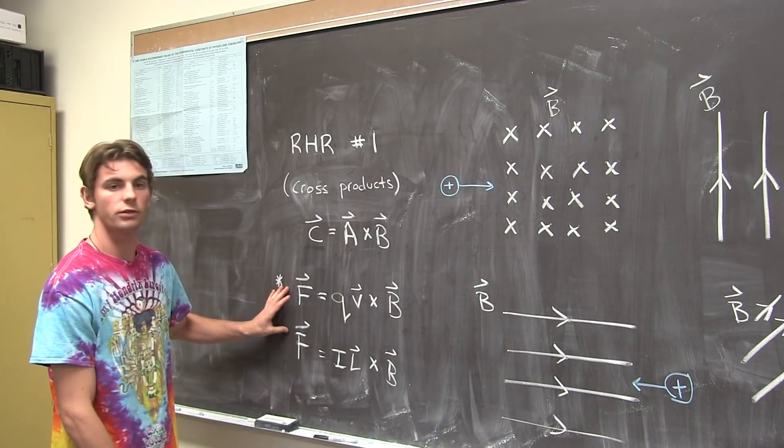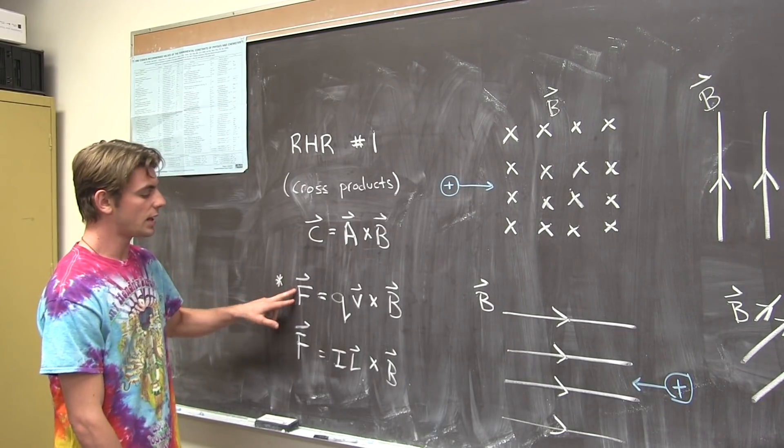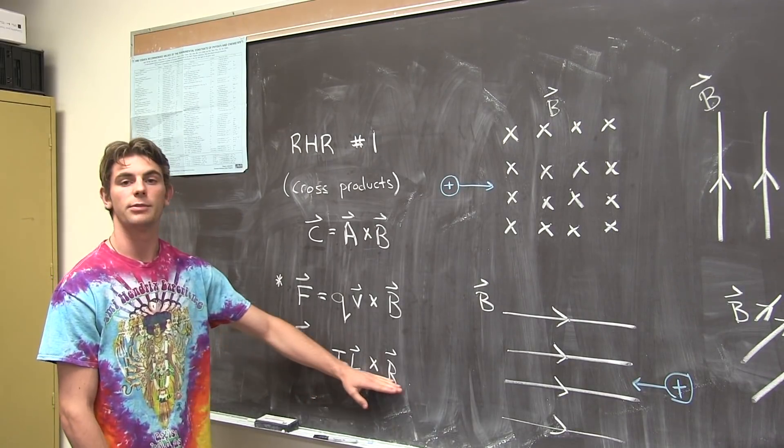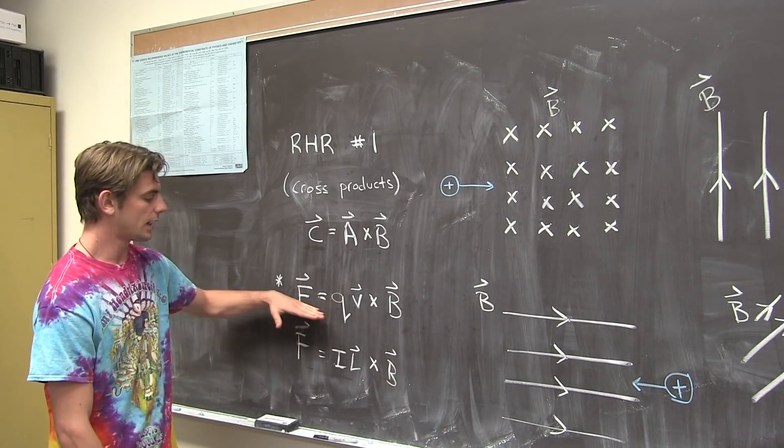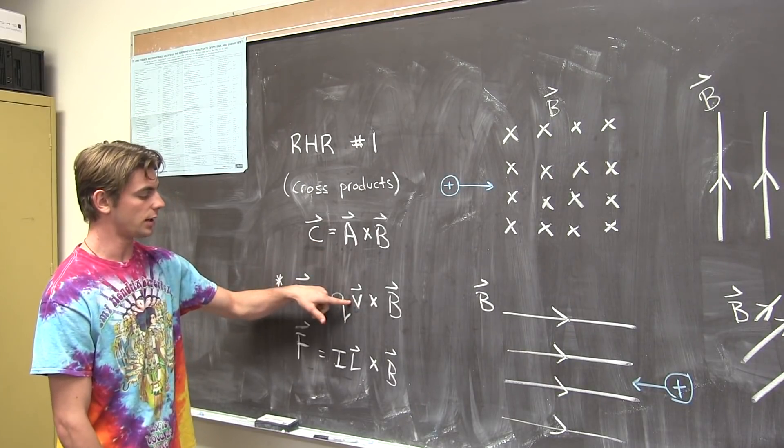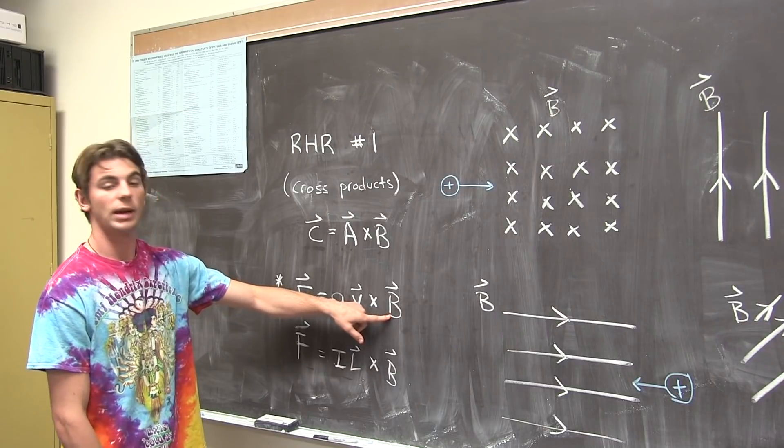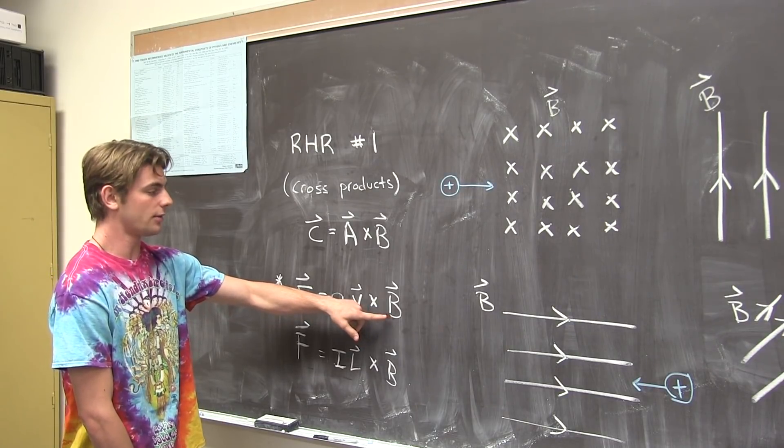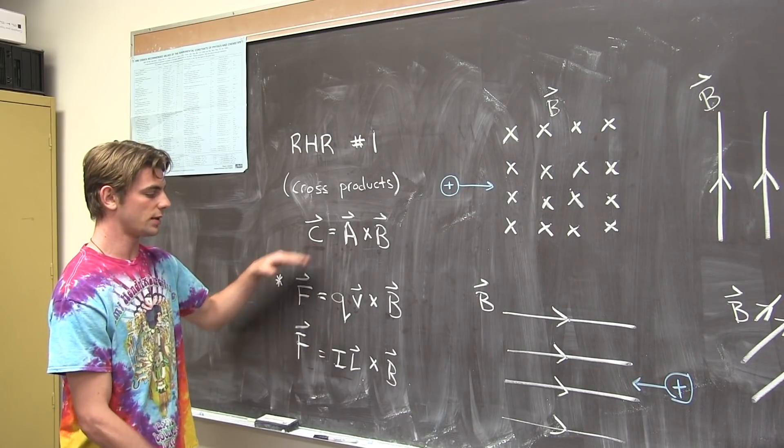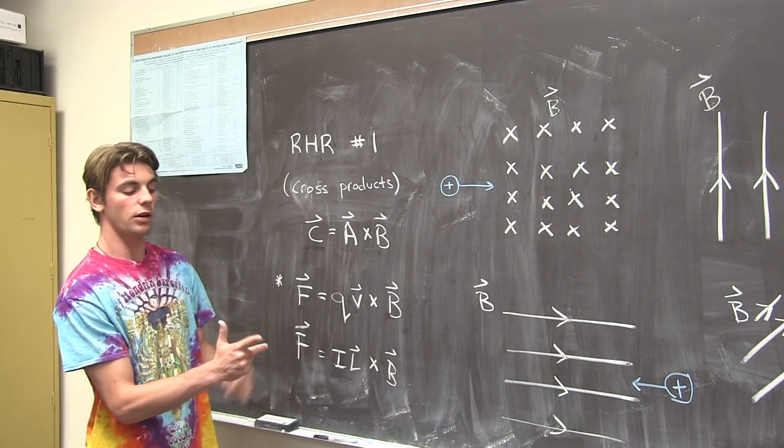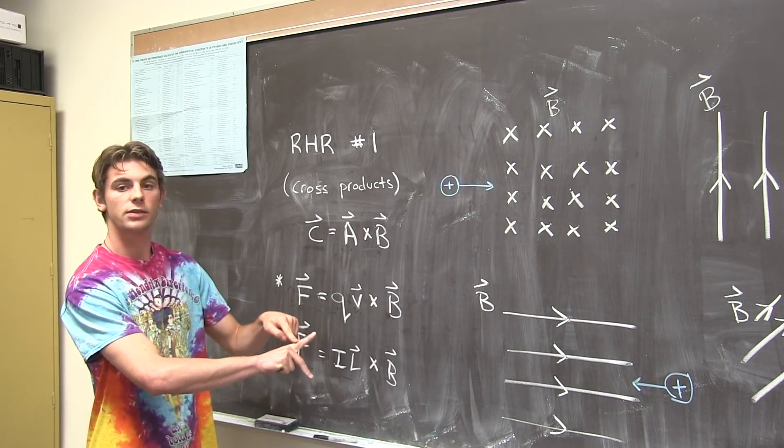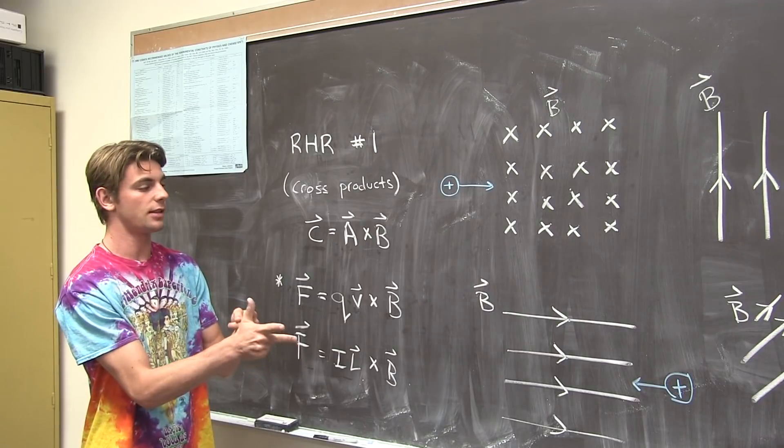So we deal with two equations of cross products. One of them has to do with the moving charge in a magnetic field, and the other has to do with the current in a magnetic field. In the first case, the vector a corresponds with the velocity vector v. And the magnetic field B, luckily enough, corresponds with b. And the resultant vector, the force, corresponds with c. And so, our equation qv cross B, v is our index finger, b is our middle finger, and f is the thumb.